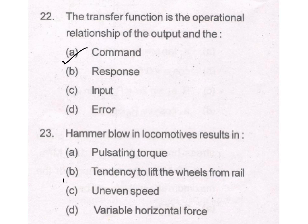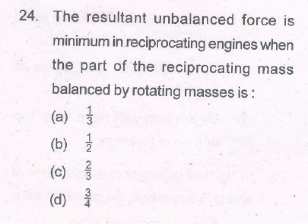The resultant unbalanced force is minimum in reciprocating engines when the part of the reciprocating mass balanced by rotating masses is 1/2. B is the answer.